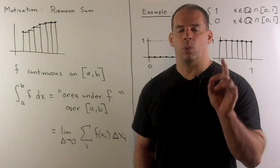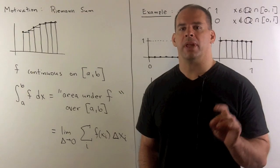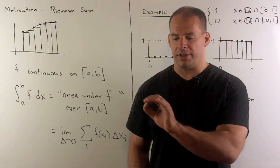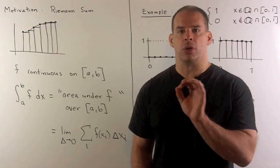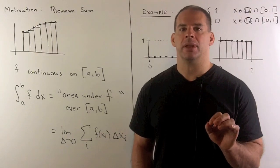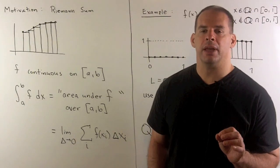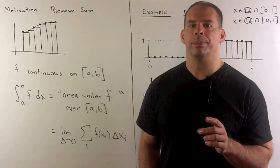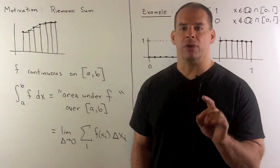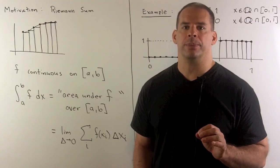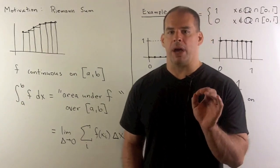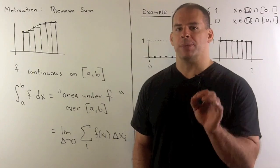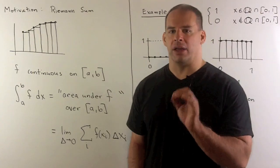For this talk, we want to motivate Lebesgue measure and the notion of measure zero. If I take the real line and choose a closed sub-interval AB, then the length of AB is B minus A. If we assume the real line has a uniform density of one, then the mass of that interval is also B minus A. Lebesgue measure is going to be a generalization of length or mass for subsets of the real line that are not intervals.